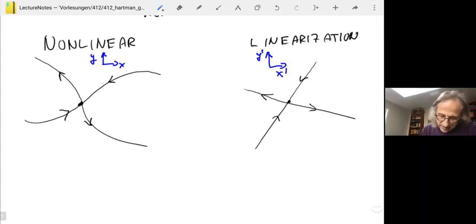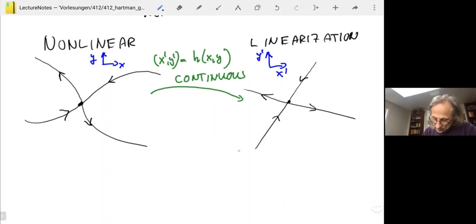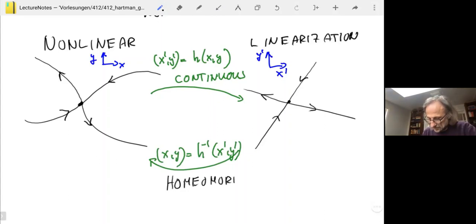And the statement is, there's a mapping from the xy plane to the x prime y prime plane. Or in other words, you can say x prime y prime is equal to some function of x and y. And that function is continuous. And more, you also can go the other way. So this is a mapping going from the nonlinear system to the linear system. But you can also go back from the linear system to the nonlinear system. And so that means this mapping h is actually invertible. That you go from the linear system to the nonlinear system with h inverse. Because it's continuous and invertible, it's actually a homeomorphism.